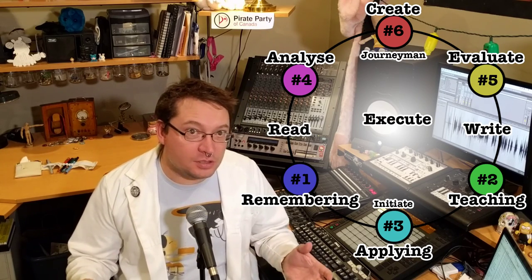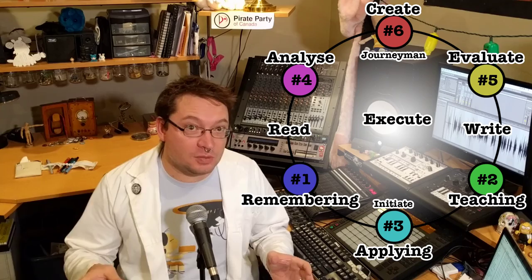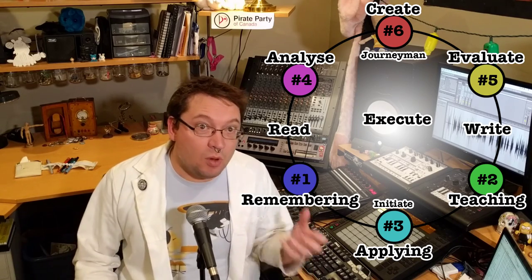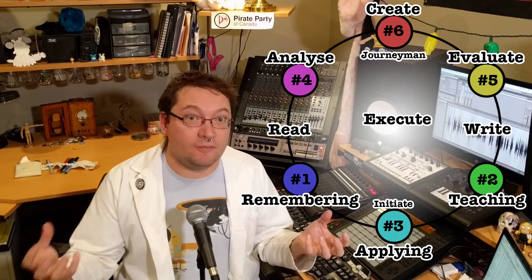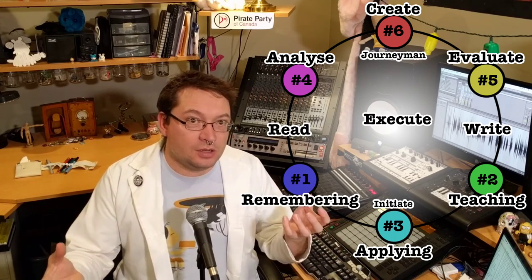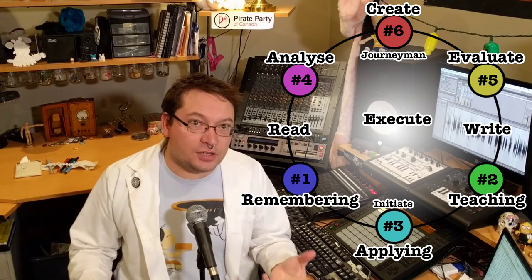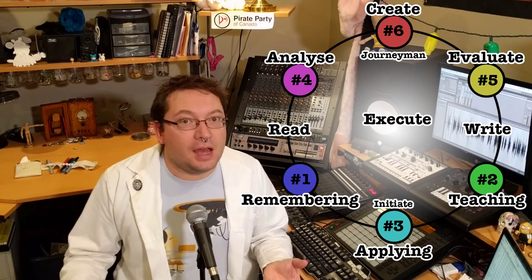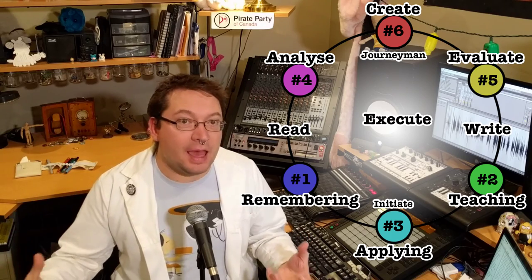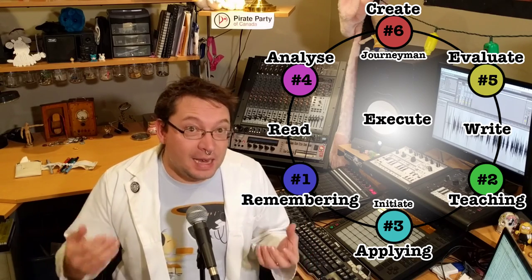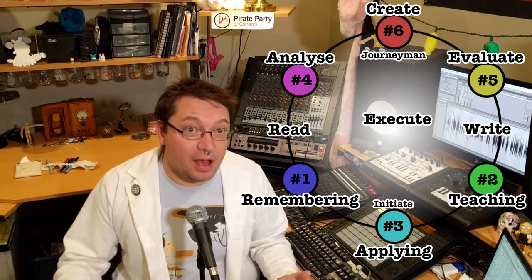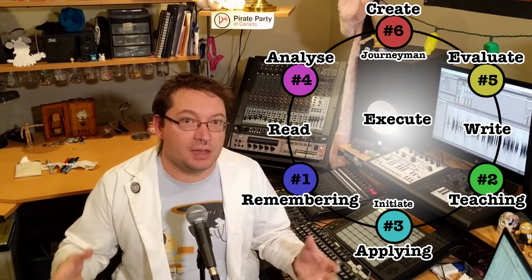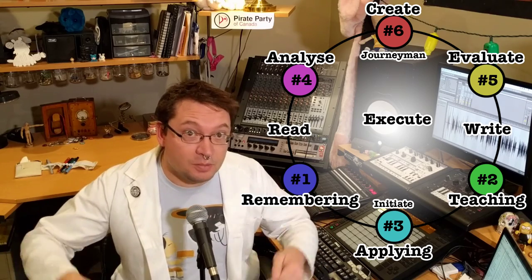When I was researching this, I came to my own conclusions. I found I could make some interesting relations between the first three levels and the next three levels, where step one, remembering, would relate to step four, analyze. There were kind of two sides of the same coin. The first side is concerned with technique and rules. The other side is concerned with a larger application of those rules and even the remixing and breaking of them. So here you can kind of see how I've contextualized Bloom's Taxonomy for myself. I'll also explain a little bit in the doobly-doo.